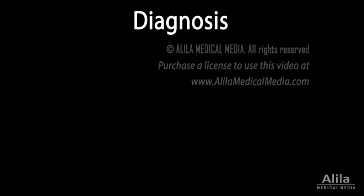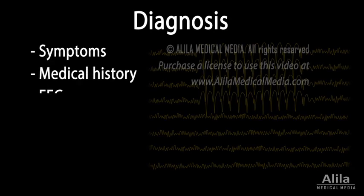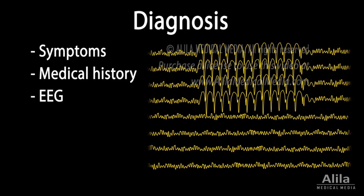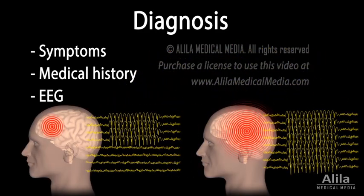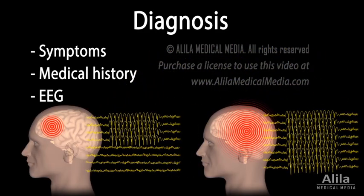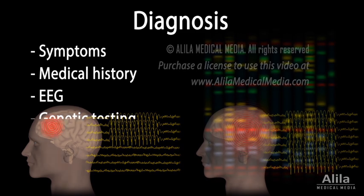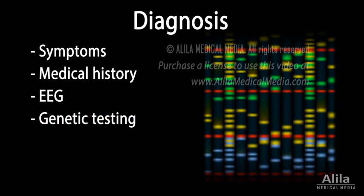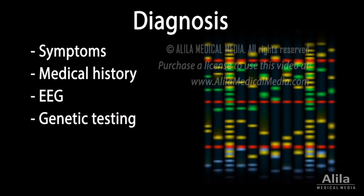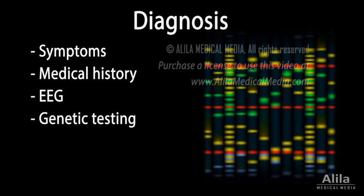Diagnosis is based on observation of symptoms, medical history, and an electroencephalogram, or EEG, to look for abnormal brain waves. An EEG may also help in differentiating between partial and generalized seizures. Genetic testing may be helpful when genetic factors are suspected.